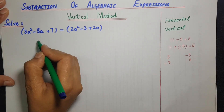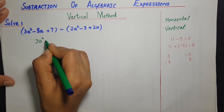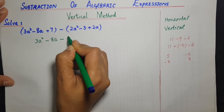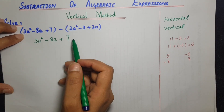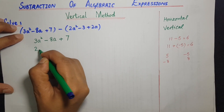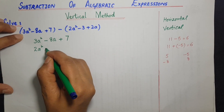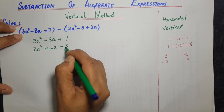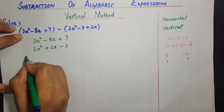سب سے پہلے کیا کرتے ہیں: first expression کو as it is لکھ لیتے ہیں۔ vertical method میں ہر expression کو الگ الگ row میں لکھا جاتا ہے۔ یہ ہم نے first لکھ لی ہے۔ اب اس میں سے second کو minus کرنا ہے۔ second کو minus کرنے کے لیے 2a² کو like term کے نیچے لکھیں گے — like term کے نیچے like term آئے گی: 2a minus 3، کیونکہ like terms کے بغیر ہم minus نہیں کر سکتے۔